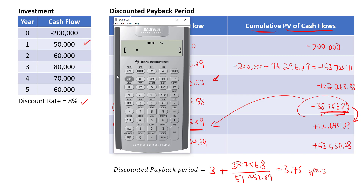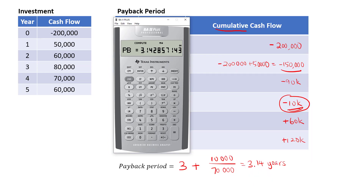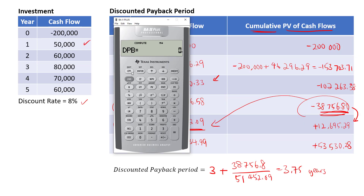Press NPV. The discount rate I is 8%, so press 8 and Enter. Scroll down — if you want the NPV, compute it: that's $53,530, which matches our earlier calculation. There is also net future value, then the payback period PB — press Compute to get 3.14 years, which does not require the discount rate. For the discounted payback period DPB, the discount rate must be entered; press Compute and you get 3.75 years — the same number as our manual calculation.